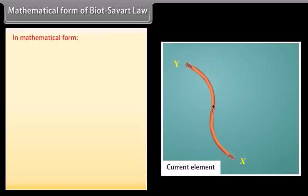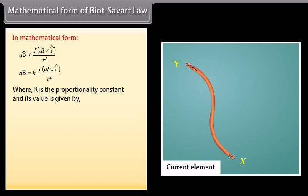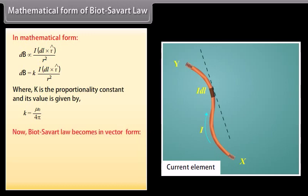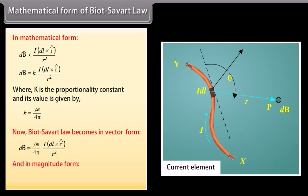In mathematical form, dB = k · I(dl × r̂) / r², where k is the proportionality constant equal to μ₀ / (4π). In vector form, the Biot-Savart law gives dB = μ₀/(4π) · I(dl × r̂) / r². In magnitude form, dB = μ₀/(4π) · I·dl·sinθ / r².